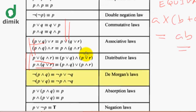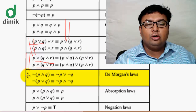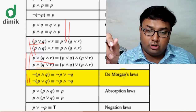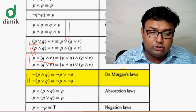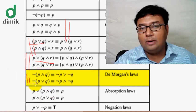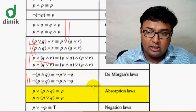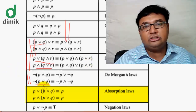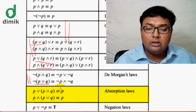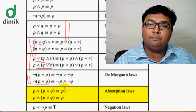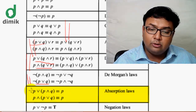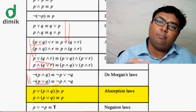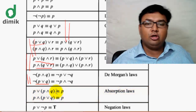De Morgan's Law states that NOT(P AND Q) is logically equivalent to NOT P OR NOT Q. Conversely, NOT(P OR Q) is equivalent to NOT P AND NOT Q. The absorption law states that P OR (P AND Q) equals P.